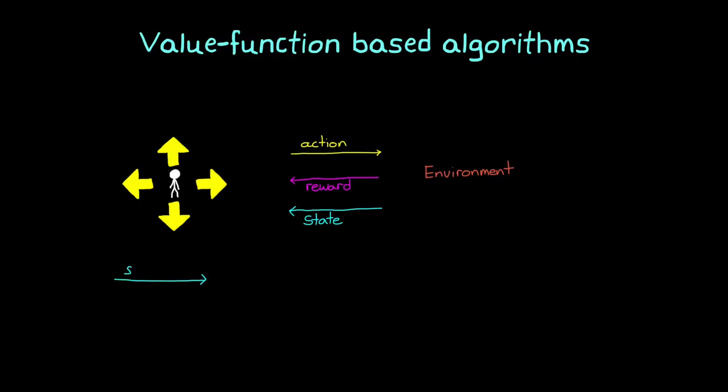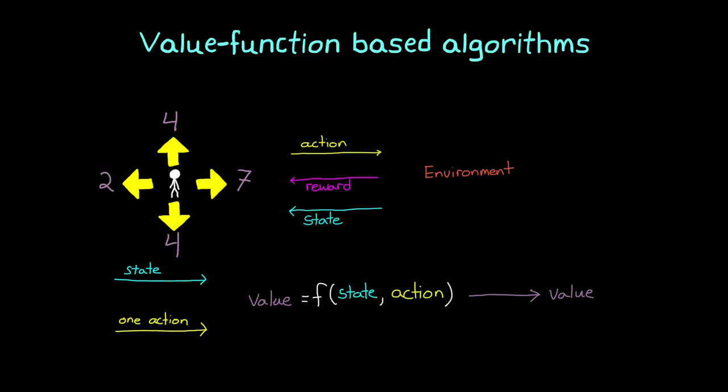With a value function based agent, a function would take in the state and one of the possible actions from that state, and output the value of taking that action. The value is the sum of the total discounted rewards from that state and on, like we talked about in the first video.